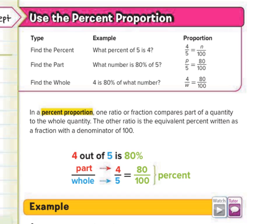Now in this lesson today, either the part's going to be missing, the whole's going to be missing, or the percent's going to be missing, and we need to use cross products in solving proportions to find one of those three.